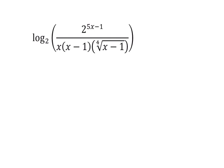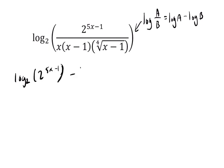Well, let's try to use the log law that says the log of the quotient equals the log of the top numerator minus the log of the bottom. In this case, that would be the log base 2 of 2 to the 5x minus 1, that's our top, minus the log base 2 of all the stuff down on the bottom, x times (x-1) times the fourth root of x minus 1.